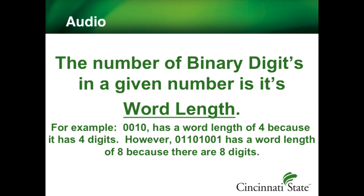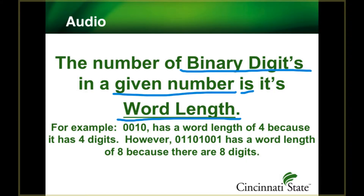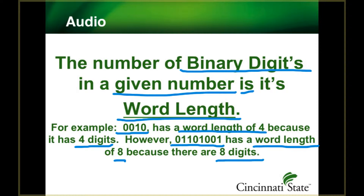The number of binary digits in a given number is its word length. For example, if we have a binary number that is 0010, it has a word length of four, because it has four digits. But a binary number of 01101001 has a word length of eight, because there are eight digits.